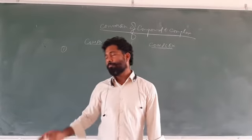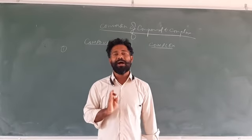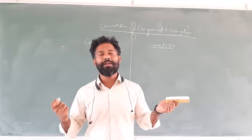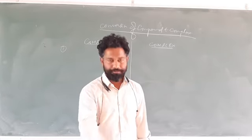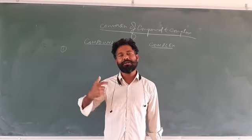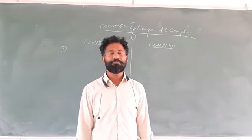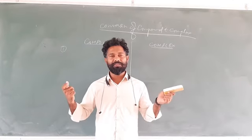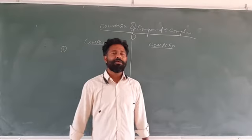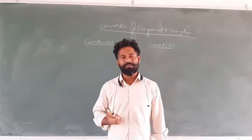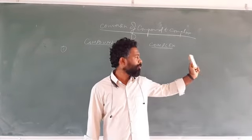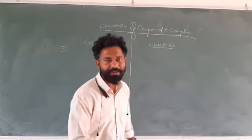Compound sentences are those sentences where there are two independent clauses, and both the independent clauses are connected by a coordinating conjunction. Without coordinating conjunction, compound sentence is not possible. Complex sentences are those sentences where there are two clauses — one is principal clause, which is independent, and the other is a dependent clause or subordinate clause. Now subordinate clause could be noun clause, adjective clause, or adverb clause.